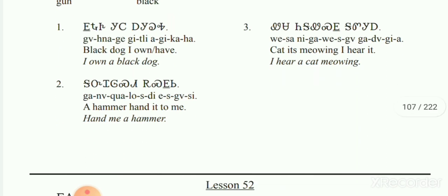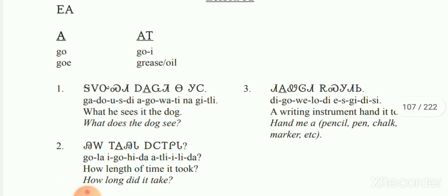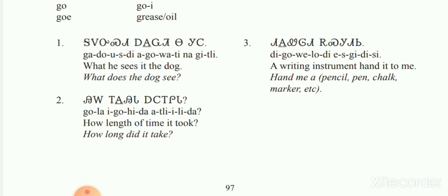Lesson 52. Key letter is Go. Your words: Go. Number 1, Number 2, Number 3.